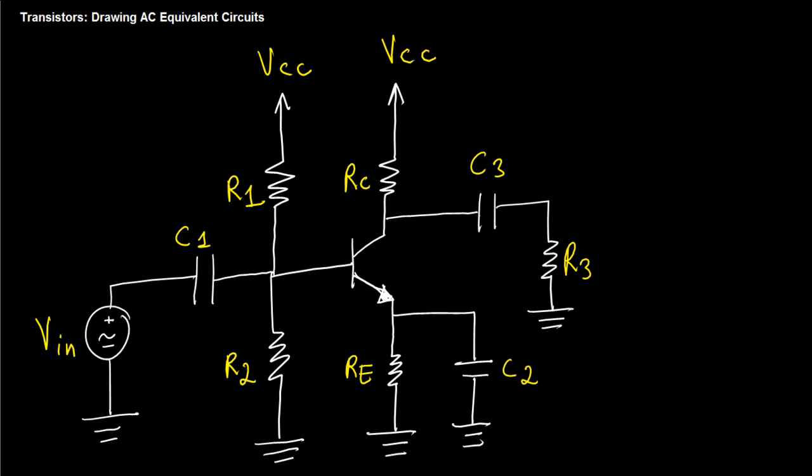So let's say you have this transistor network and you want to find the AC equivalent circuit. What you want to do is replace any DC voltage with a short circuit, any capacitor with a short circuit, and any inductor with an open circuit.